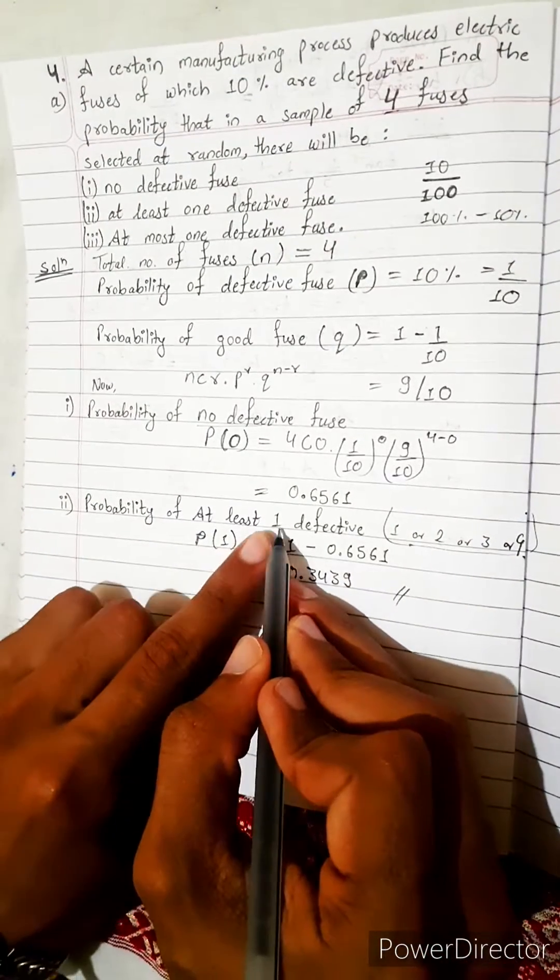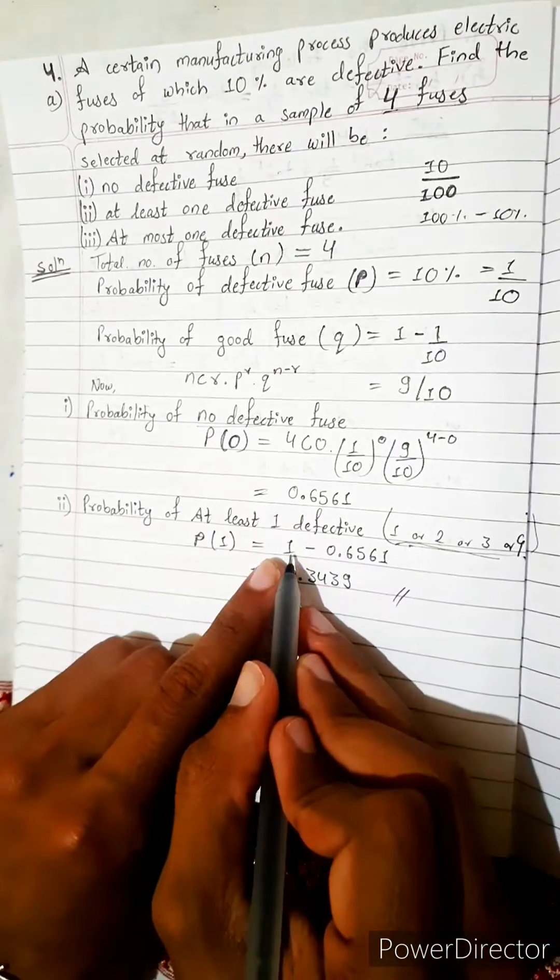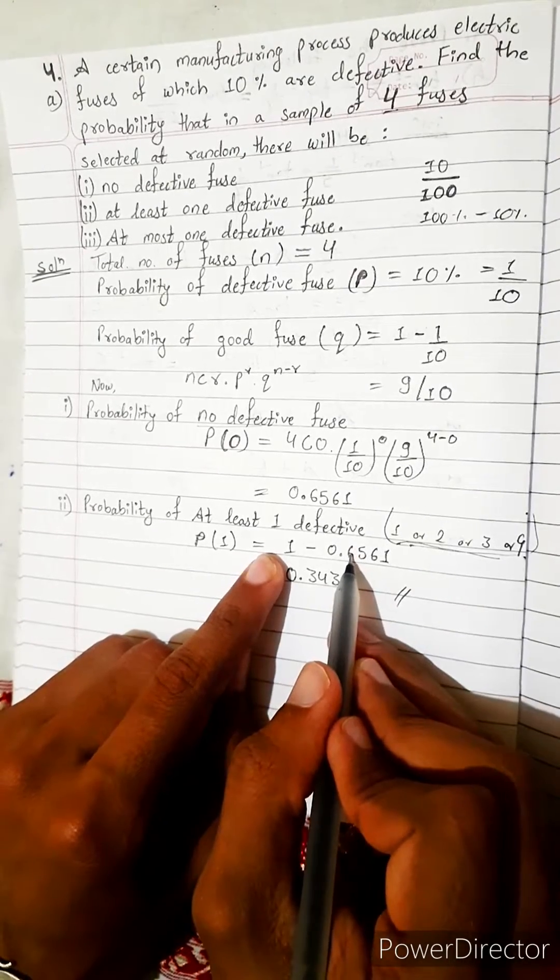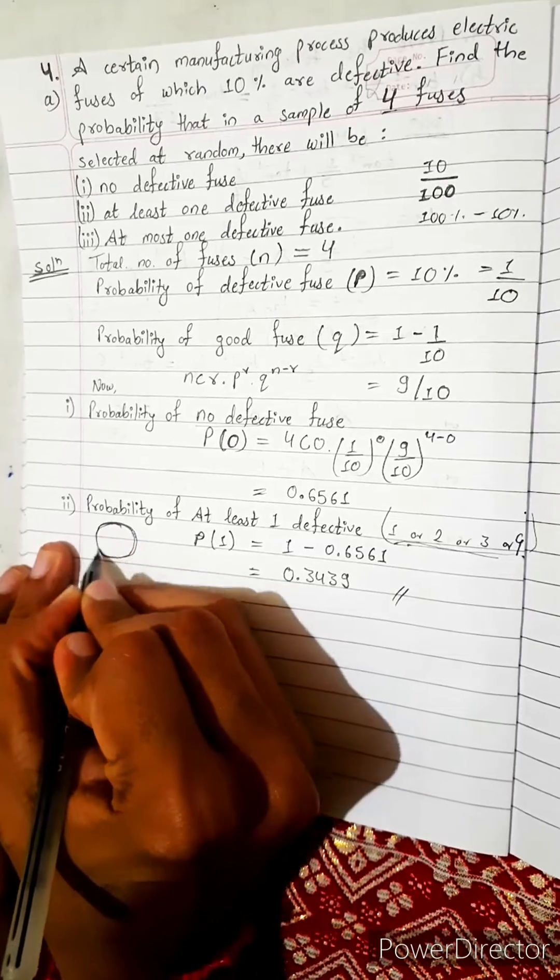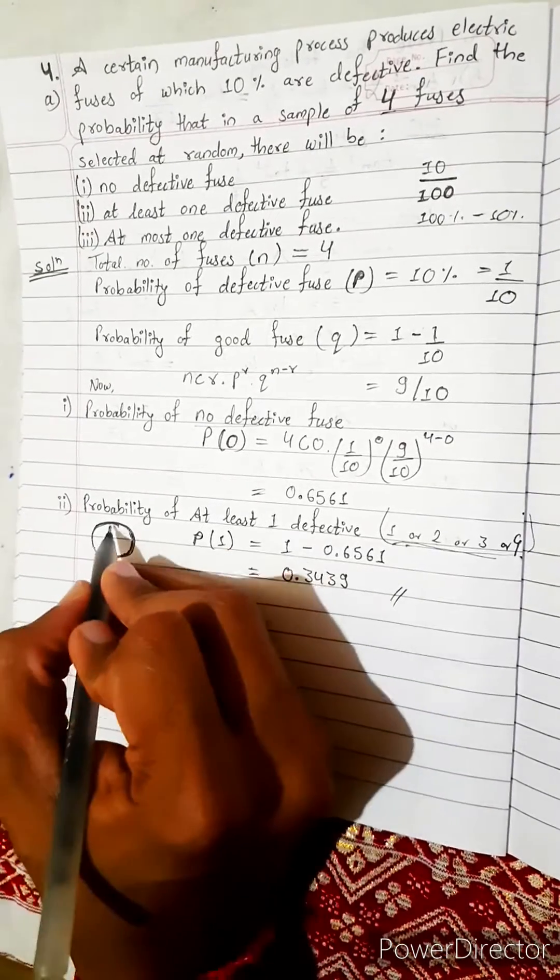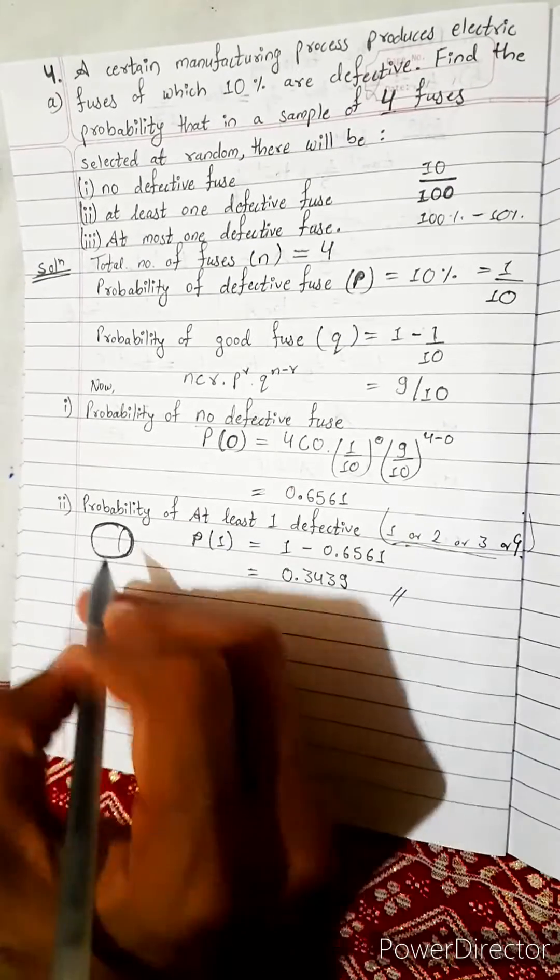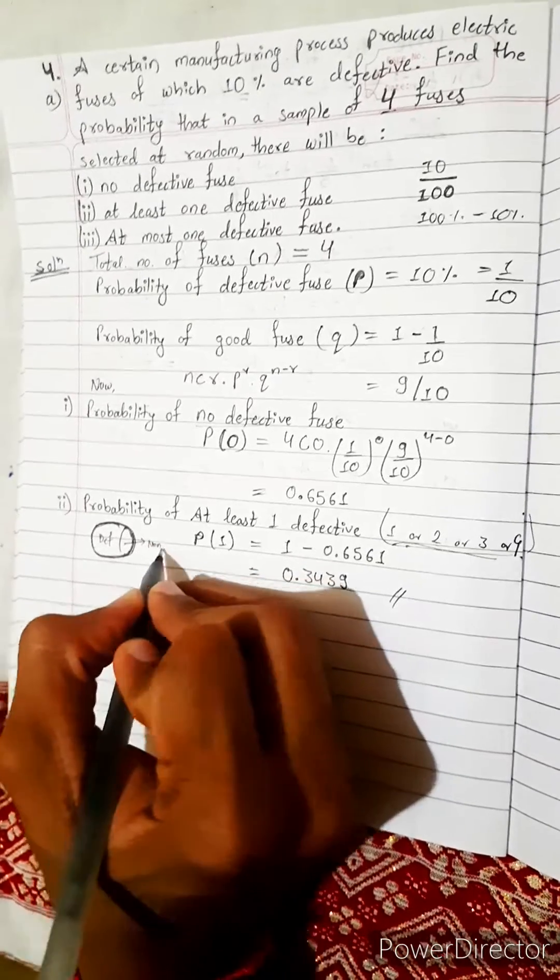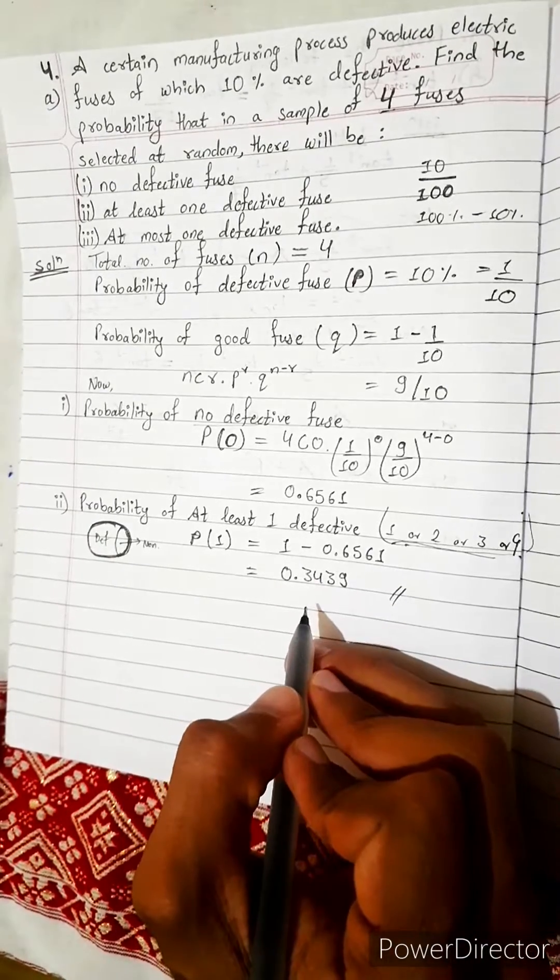We can do directly also, because at least one defective means this is defective, this is non-defective. One means all, complete. Complete minus defective. Use this set formula. This is complete, all, total number of fuse. This is non-defective, and this will be defective. So one means all total number, subtract this from this.